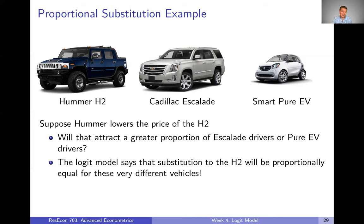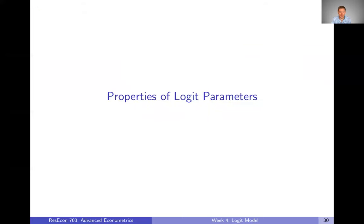There are some settings where this assumption may be fine, but in this example it seems way overly restrictive if we actually care about interpreting substitution patterns. That's the big downside of the logit model. In the next video, we'll keep talking about more properties — in particular, properties of the parameters we're estimating in these models.